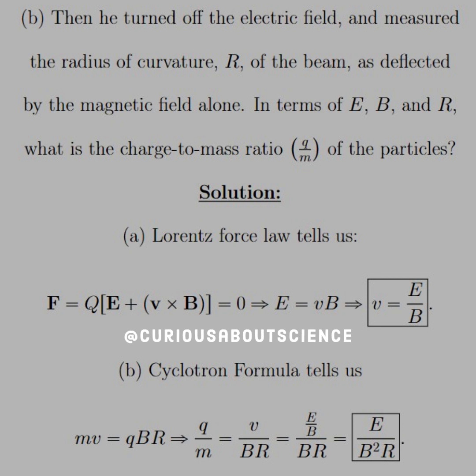So E is equal to VB, where V is now equal to E over B. Pretty simple inspection there.